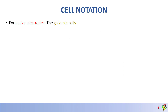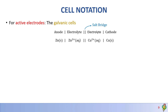Let's talk about the cell notation. For active electrodes in a galvanic cell, we have two lines in the middle representing the salt bridge. The anode is on the left side separated by one line, then the electrolyte. On the right side we write the electrolyte separated by one line, then the cathode. For the zinc-copper cell: zinc solid | zinc 2+ (aq) || copper 2+ (aq) | copper solid.